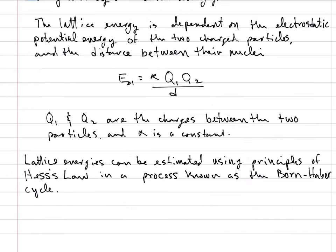The lattice energy is dependent on the electrostatic potential energy of the two charged particles and the distance between their nuclei. Q1 and Q2 are the respective charges between the two particles, d is the distance, and k is a constant.